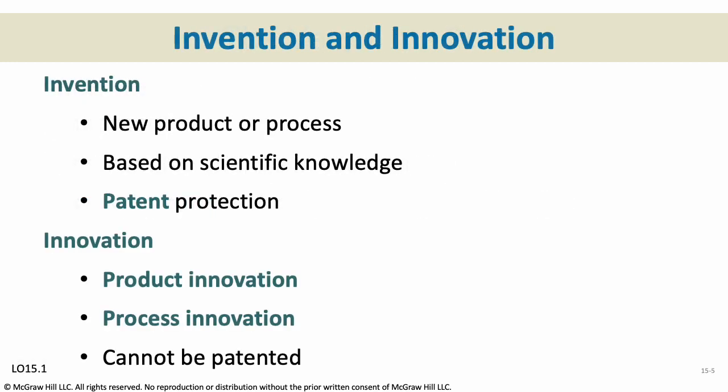An invention is any time we make a new product or process. When Apple came up with the iPhone, that was an invention — a new product based on scientific knowledge. Inventions are generally patented and legally protected. I can't make a cell phone that looks like an iPhone and call it an iPhone if I'm not Apple. Apple has patented the iPhone and trademarked all of its various devices.